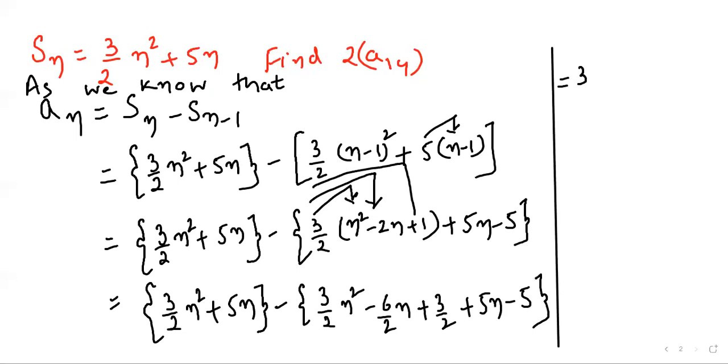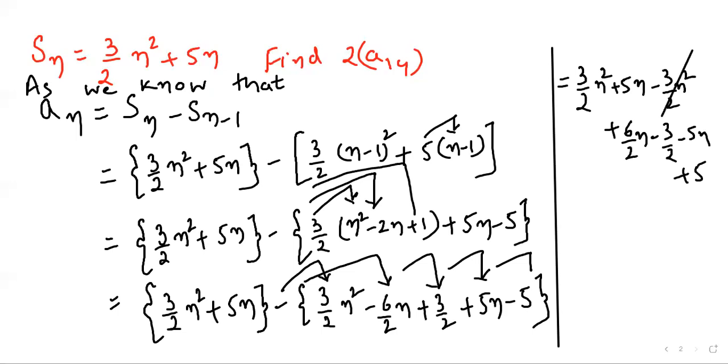Now we need to open the bracket simply. 3n squared plus 5n minus 3n squared plus 6 by 2 n minus 3 by 2 minus 5n plus 5. My arrows are going along with that. We need to simplify 3n squared by 2.